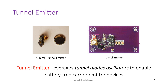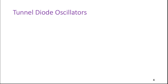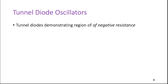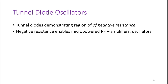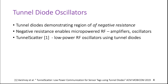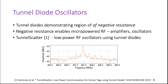Tunnel Emitter achieves this through the use of tunnel diode oscillators. Tunnel diode oscillators are designed using a fascinating device discovered in the late 1950s — the tunnel diode. Tunnel diodes demonstrate a region of negative resistance, which allows their use in the design of micro-powered RF amplifiers and oscillators. We previously demonstrated through our system Tunnel Scatter, presented at last year's MobiCom, the design of a low-powered, high-frequency RF oscillator using tunnel diodes. It allowed us to generate a carrier signal within the 868 MHz band while consuming tens of microwatts of power, as shown in the spectrum plot on the slide.